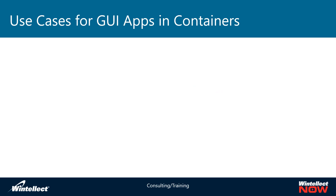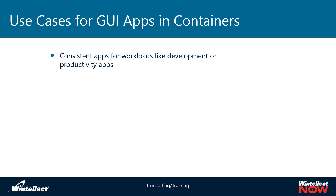Today we're going to be looking at use cases for GUI apps within Docker containers. The first use case is consistent workloads that run in a graphical user interface, such as development or productivity apps, where you want to distribute these apps to users and have them run on a desktop like Windows. We're going to focus on the Windows use case today, showing how Docker containers can actually pull up as a window on top of the Windows operating system using Docker Desktop.